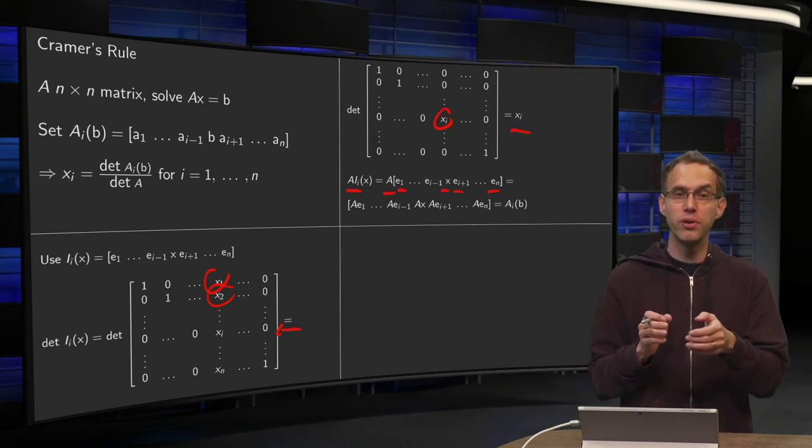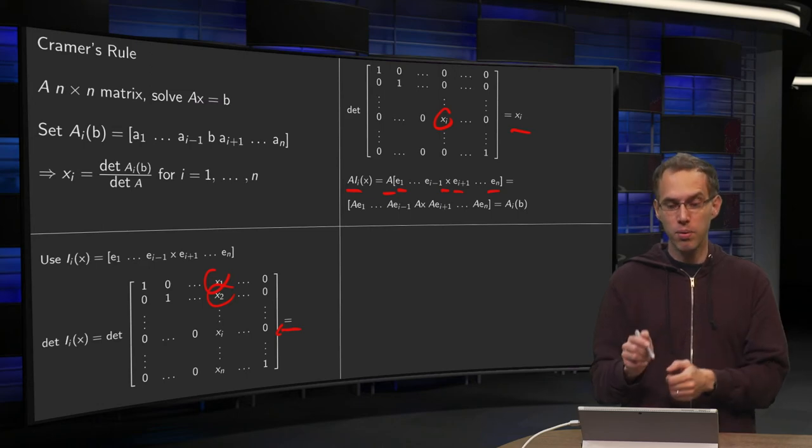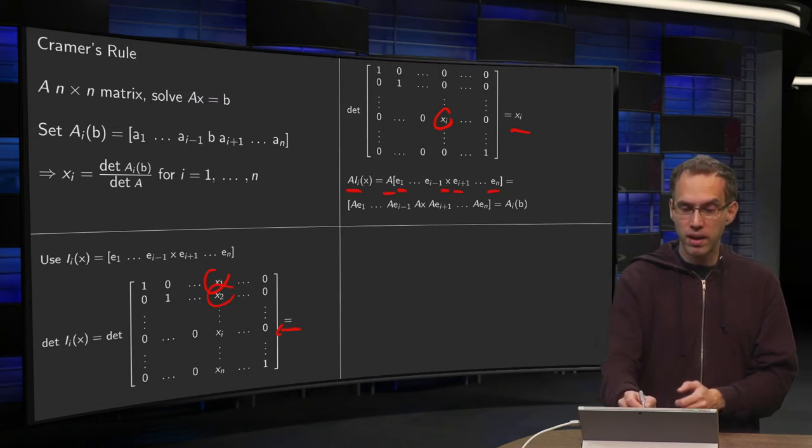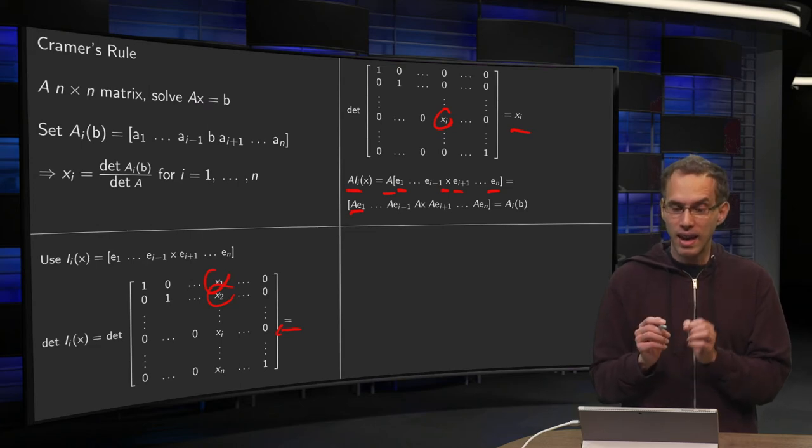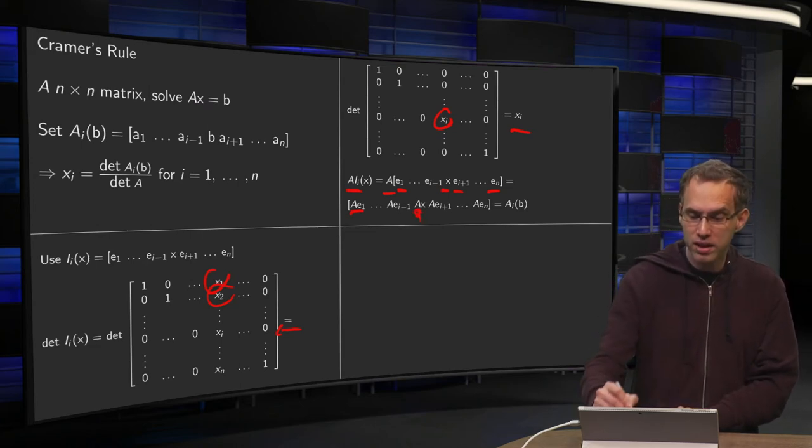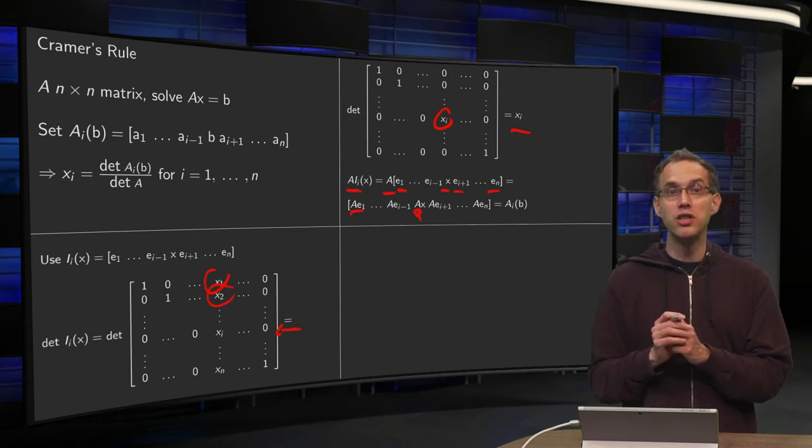This yields A times e_1, A times e_2, and so on. A times e_1 equals a_1, A times e_2 equals a_2, and so on. And the A times x over here gives you exactly b.